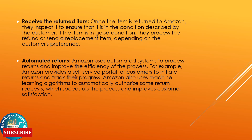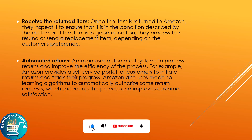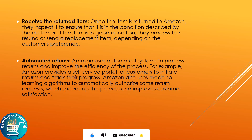Step five: Automated returns. Amazon uses automated systems to process returns and improve the efficiency of the process. For example, Amazon provides a self-service portal for customers to initiate returns and track their progress. Amazon also uses machine learning algorithms that automatically authorize some return requests, which speeds up the process and improves customer satisfaction.